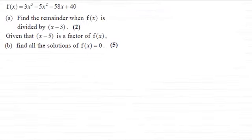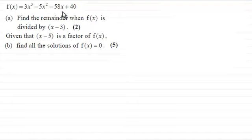Hi there. For this question we're given that f of x equals 3x cubed minus 5x squared minus 58x plus 40. In the first part we're asked to find the remainder when f of x is divided by x minus 3, for two marks.